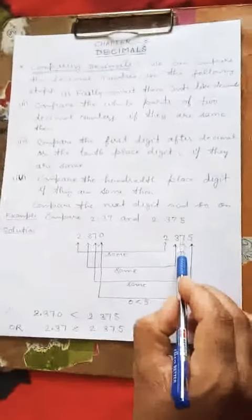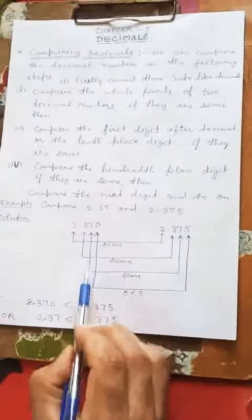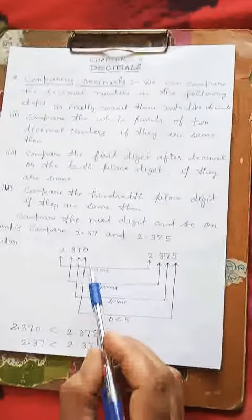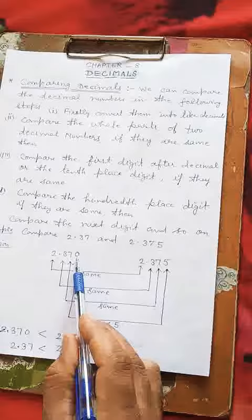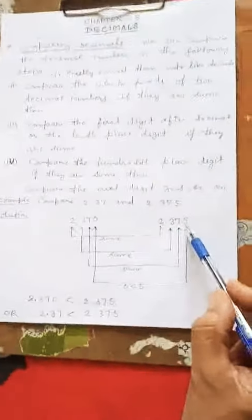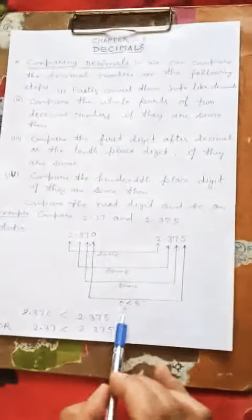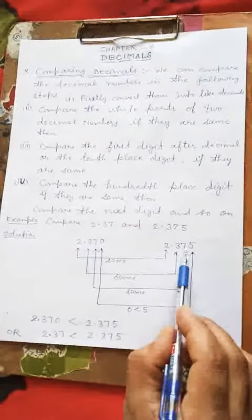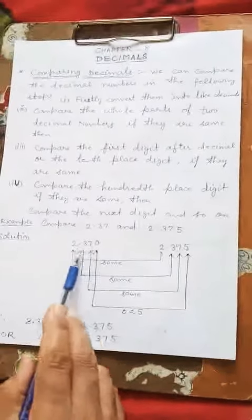Then we go to the hundredth place digit. Here is 7, and in the second number it is also 7 — the hundredth place digits are the same. Then we go to the next place, which is the thousandths place. Here is 0, and here is 5. We see that 0 is less than 5, so 2.375 is greater than 2.370.